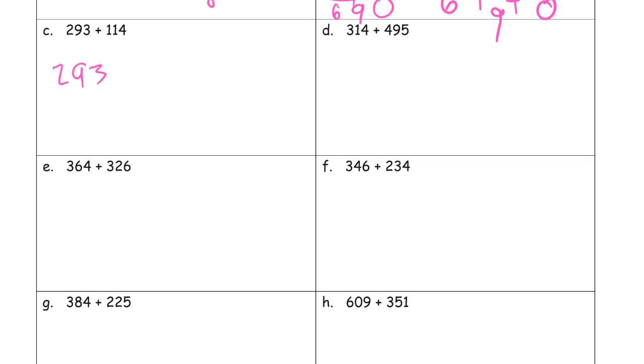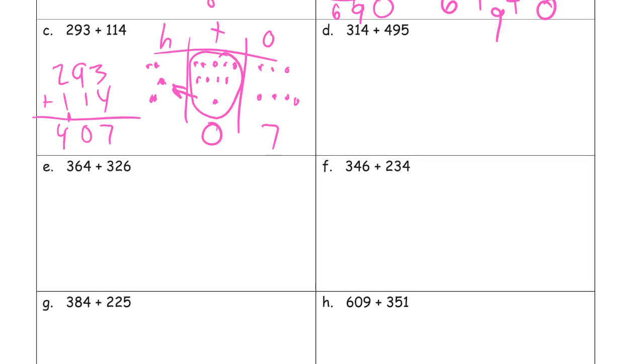293, that's 114. 3 plus 4, 7. Didn't have to compose a 10. But we are going to have to compose a 100 here. And count our hundreds. 1, 2, 3, 4, 407. With the chip model, 293 is 2 hundreds, 9 tens, and 3 ones. 114, I need another 100, I need a 10, and I need 4 ones. Now I'm looking here at our ones. Don't need to compose any 10s. I can just count them, 7. All of these tens here, there's 9 and 1 more. That's 10 tens. That's going to make - I have to compose a 100. So I'm going to have 0 tens left. And then 1, 2, 3, 4 hundreds, 407.